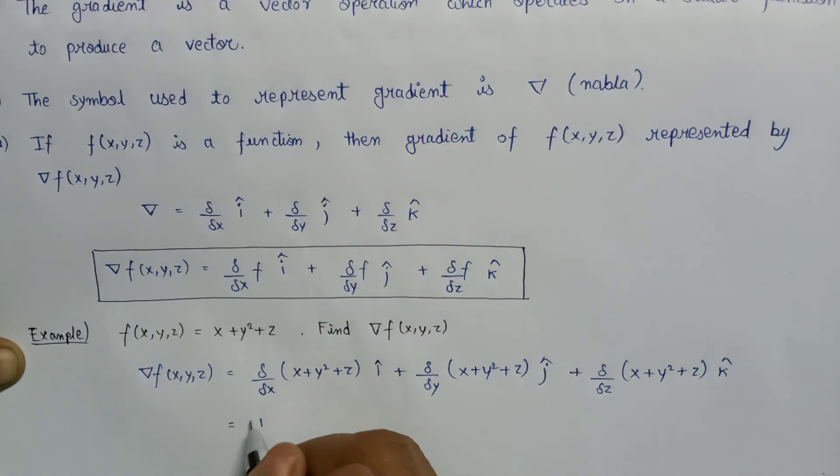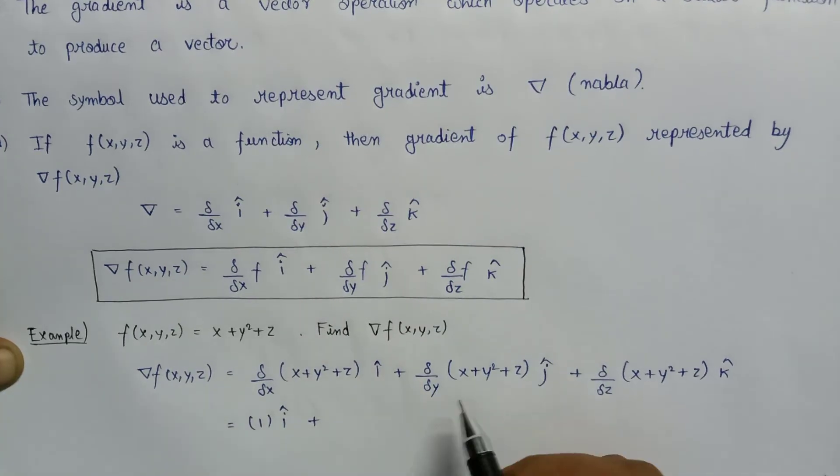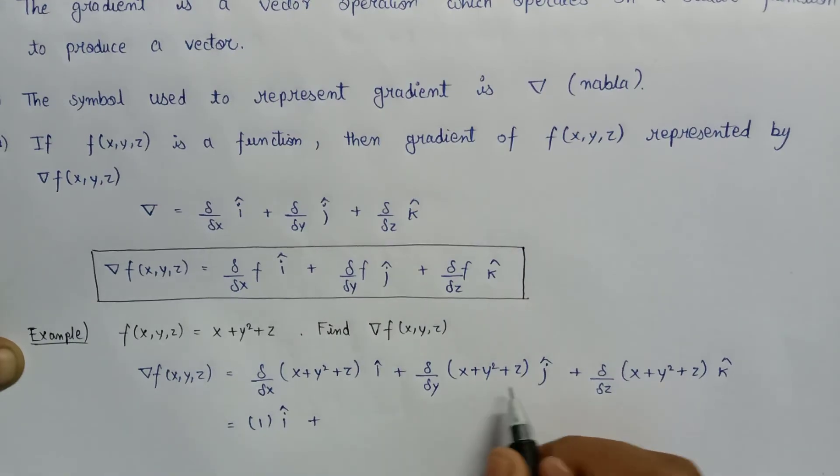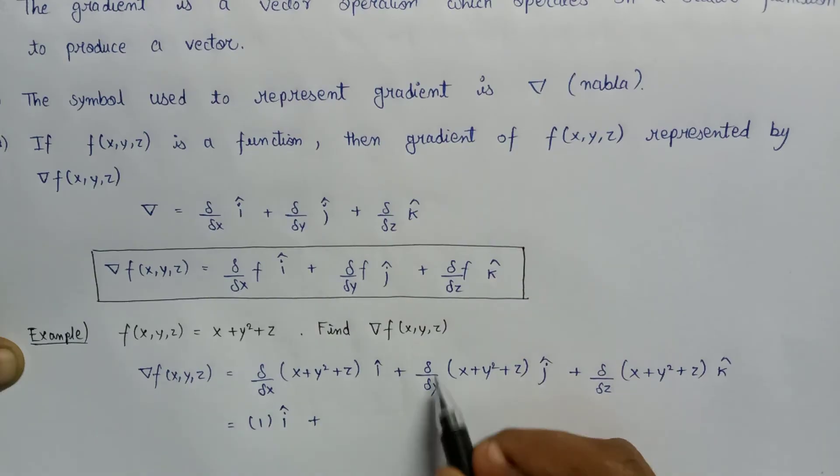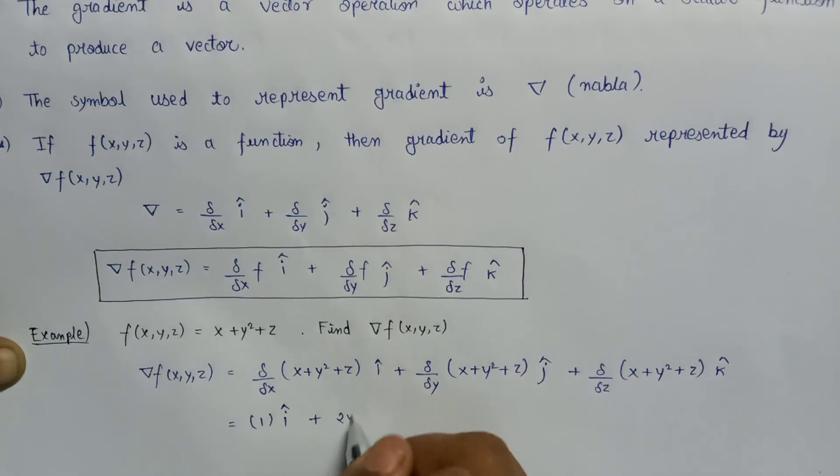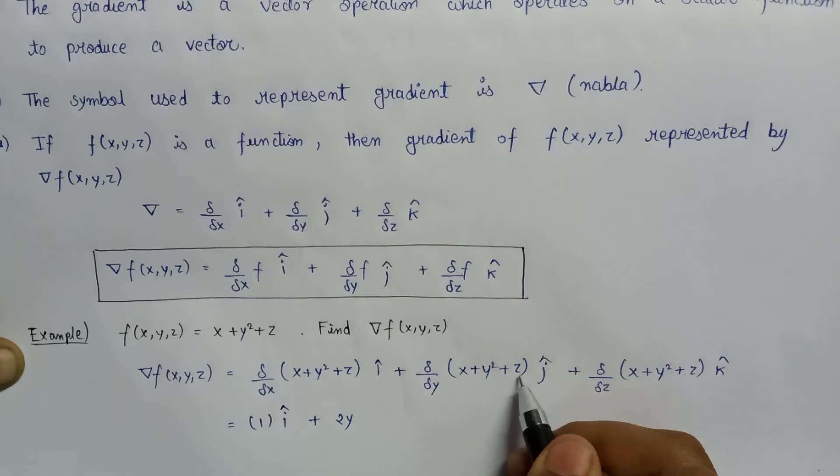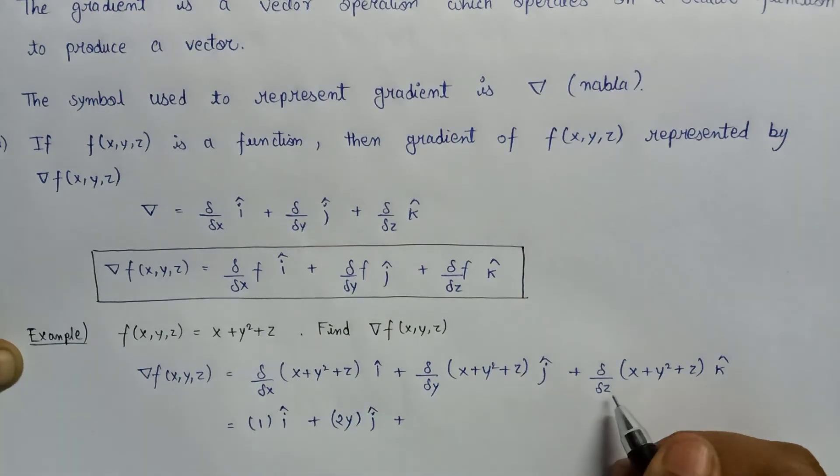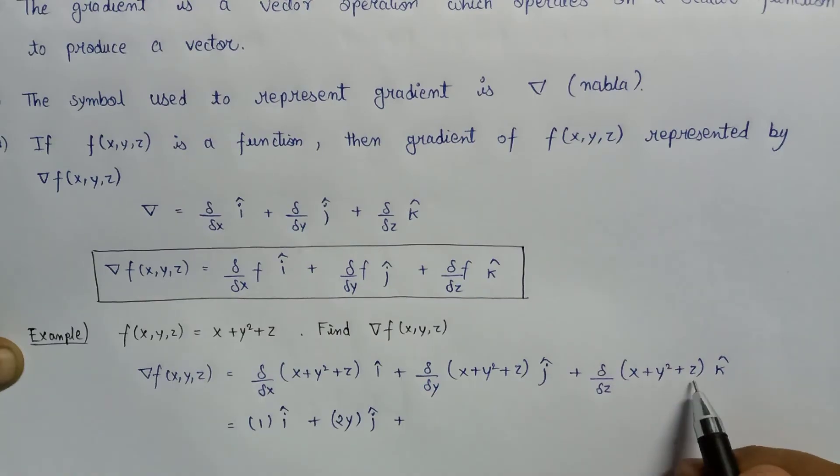1 will be multiplied with i cap. Then differentiating x with respect to y becomes 0, and the differentiation of y square with respect to y will become 2y. Here is also 0, so 2y is multiplied by j cap. And del over del z of x will become 0, and del over del z of z becomes 1. So 1 is multiplied with k cap.